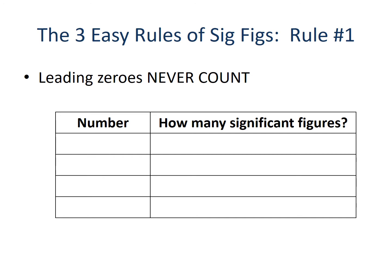Let's apply rule number one — leading zeros never count. Here we have the number 007. Dr. John Dee was court magician and counsel to Queen Elizabeth the First, and when he traveled on the Queen's behalf, this was the number he used to identify himself in correspondence with the Queen. So before it was Bond, James Bond, it was D, John Dee. But applying rule number one, those first two zeros go away, leaving us with only the seven. So 007 has just one significant figure.